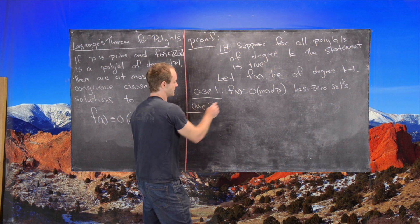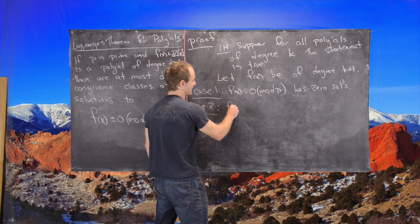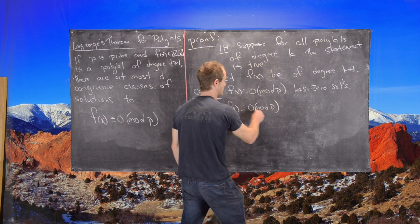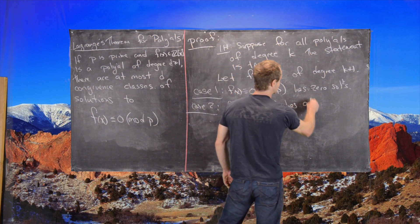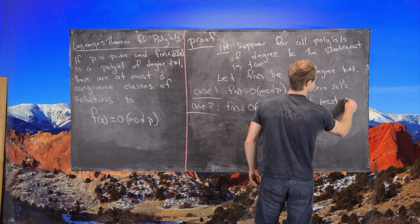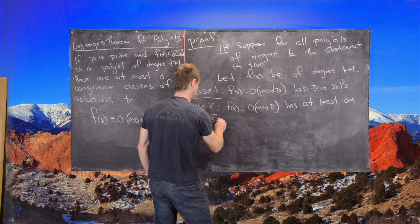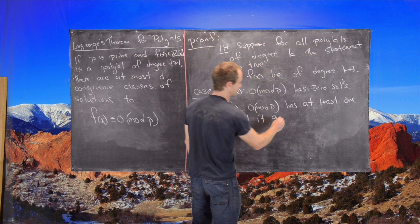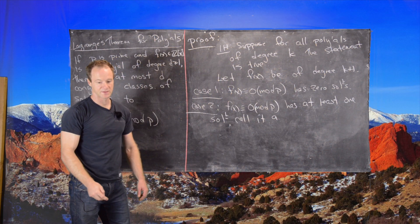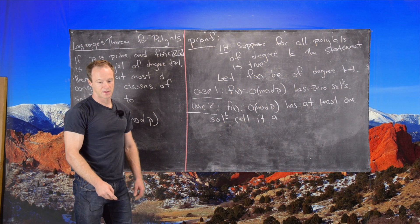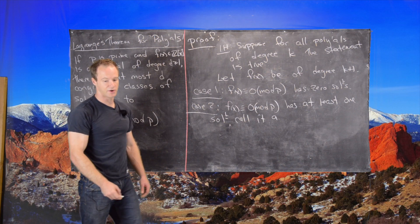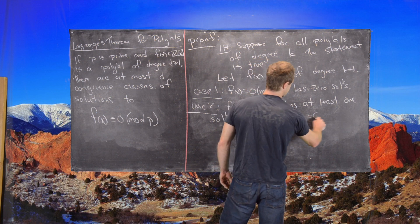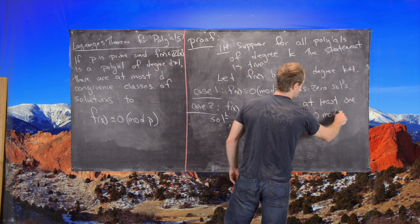Case number two is F of X is congruent to 0 mod P has at least one solution. Let's call it A. That means that F of A is congruent to 0 mod P.